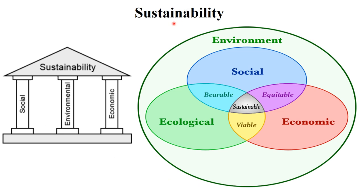If we want to manage any natural resources like fisheries resources, then we have to make it sustainable. So what is sustainability? Sustainability is a concept that has three pillars: social, environmental, and economic. So making any natural resources sustainable, we have to make it ecologically viable, socially bearable, and economically equitable. If you manage things from these three points of view, then you can manage the resources sustainably. This is the definition of sustainability.